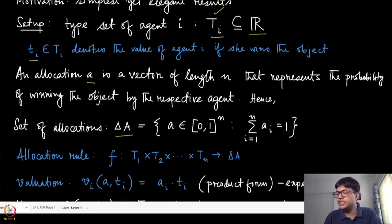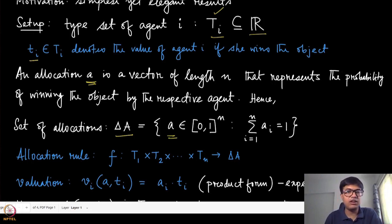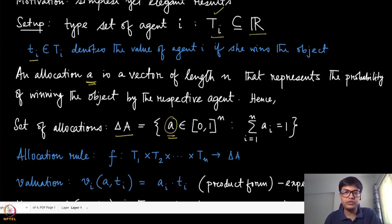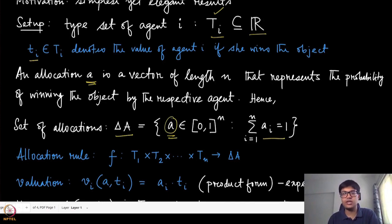The set of allocations in this case is no longer a set of pure allocations; it is a probabilistic allocation. Delta of A is nothing but a simplex where each element is a vector of numbers between 0 and 1 that all add up to 1. This is a probability distribution over the n agents — the object is allocated probabilistically among one of these agents, and we assume the object is definitely going to be allocated.